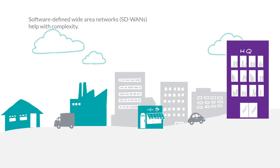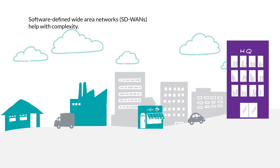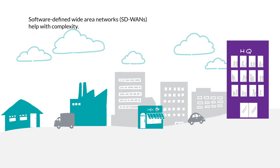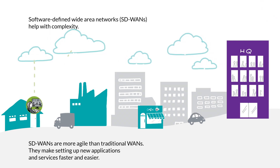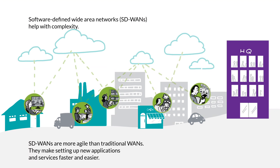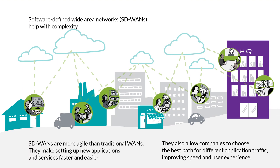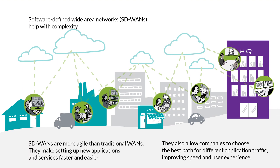Software-defined Wide Area Networks, or SD-WANs, help with complexity. SD-WANs are more agile than traditional WANs. They make setting up new applications and services faster and easier. They also allow companies to choose the best path for different application traffic, improving speed and user experience.